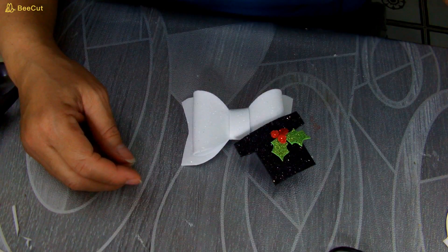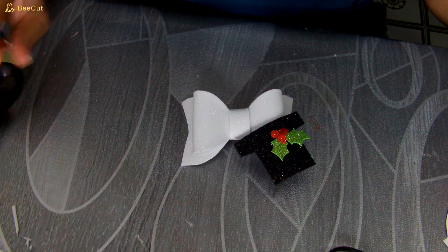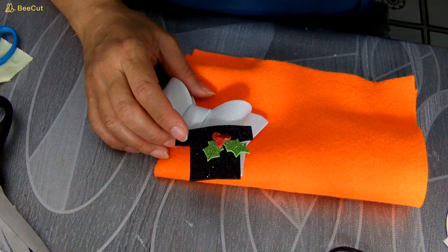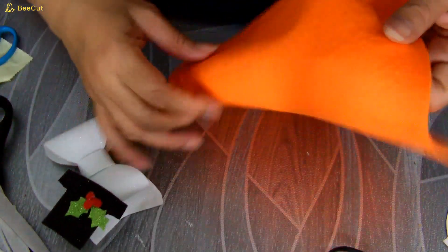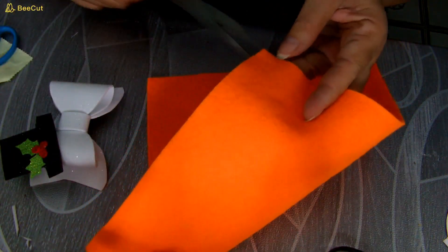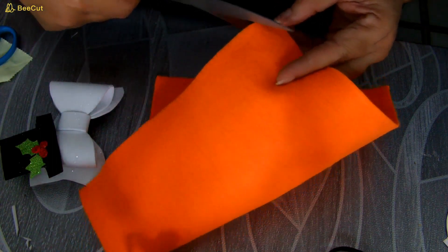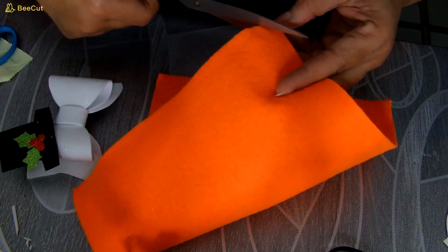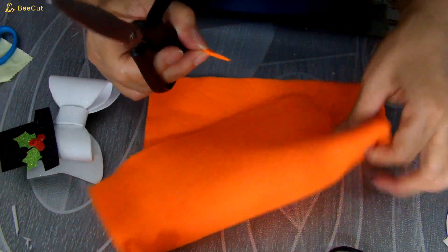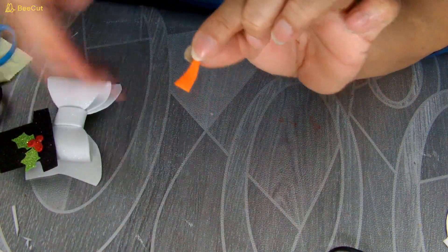Vamos a hacerle la naricita del muñeco de nieve, que es otro accesorio que lleva el muñeco de nieve. Tengo aquí fieltro naranja. Voy a cortar un pedacito, una esquinita para hacer así como un triangulito. Así pequeñito. Solamente la esquinita le quité y se la quité así en esa formita como de triángulo, ven.